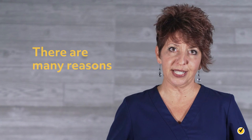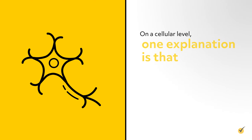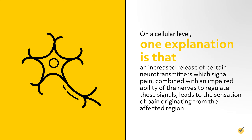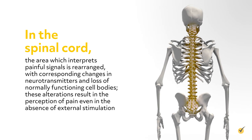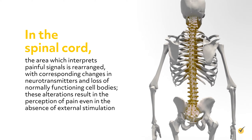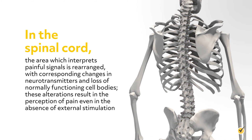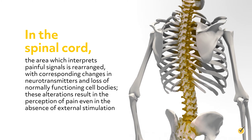There are many reasons that patients may develop neuropathic pain. However, on a cellular level, one explanation is that an increased release of certain neurotransmitters which signal pain, combined with an impaired ability of the nerves to regulate these signals, leads to the sensation of pain originating from the affected region. Additionally, in the spinal cord, the area which interprets painful signals is rearranged with corresponding changes in neurotransmitters and loss of normally functioning cell bodies. These alterations result in the perception of pain, even in the absence of external stimulation.